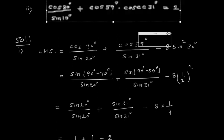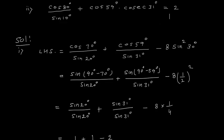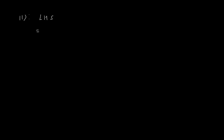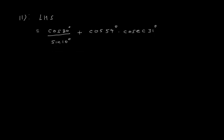Now let us solve the second question. Here we have to prove that this expression equals 2. Starting with LHS, cos80° = sin(90° − 80°) / sin10°.